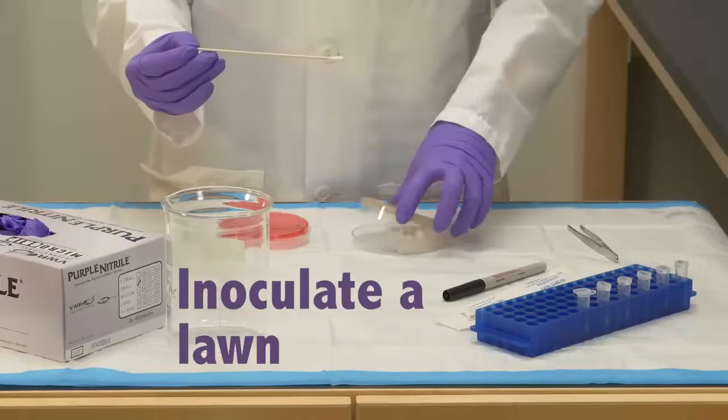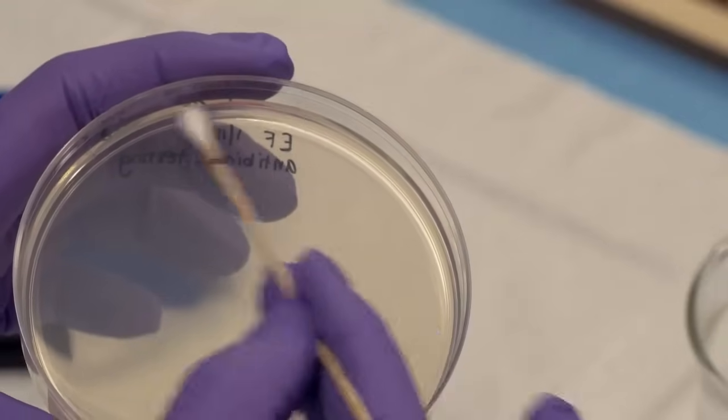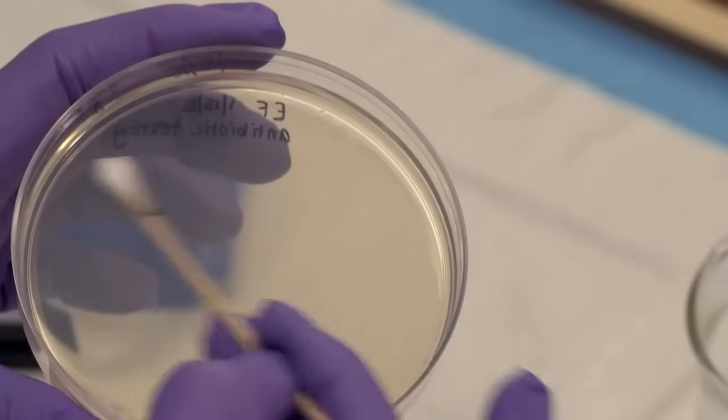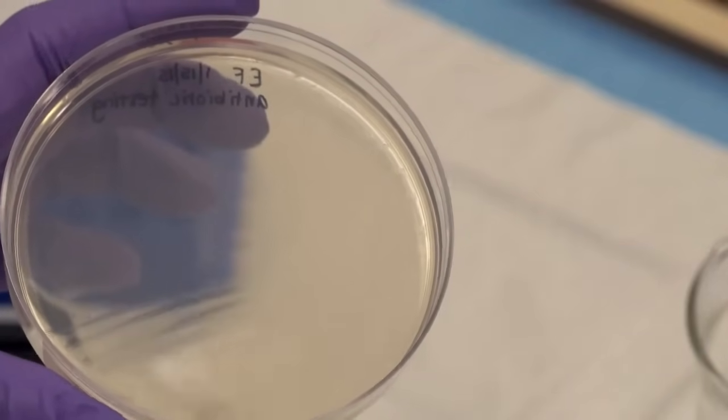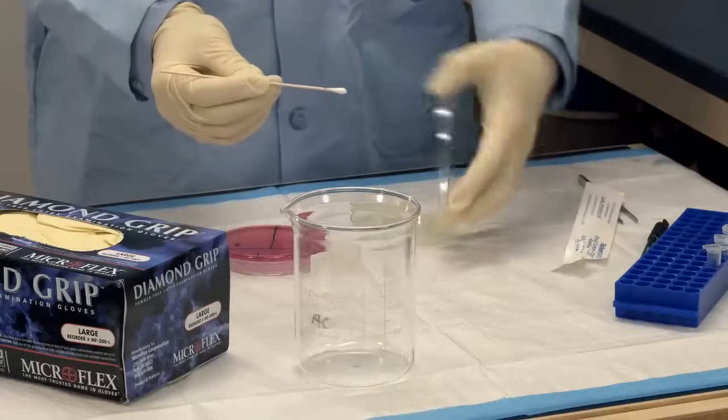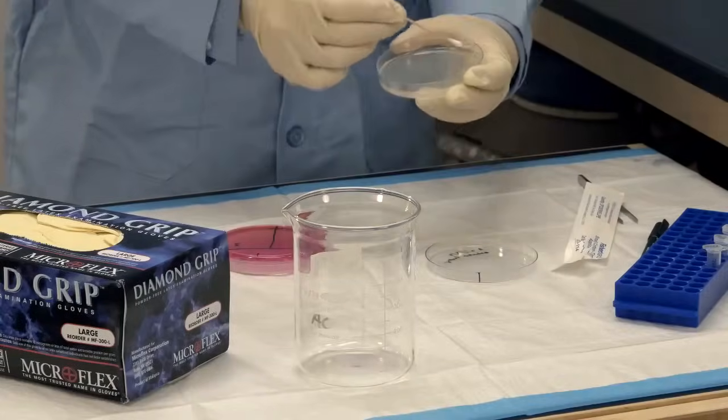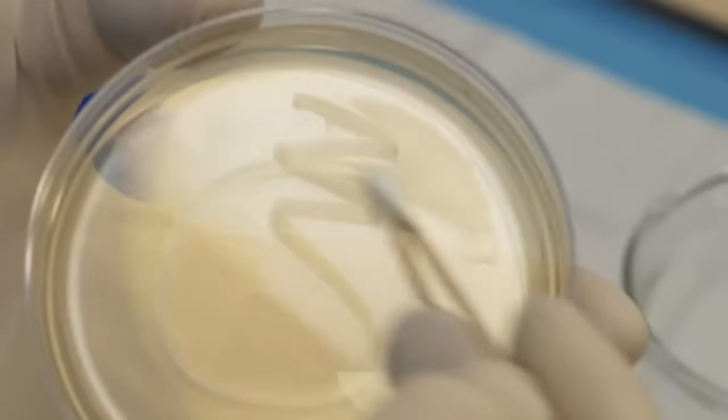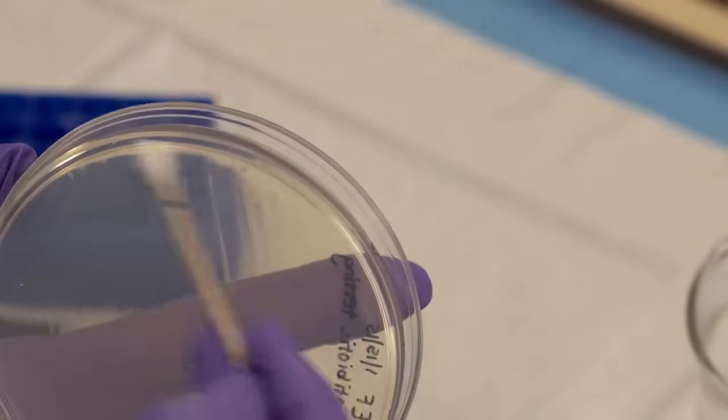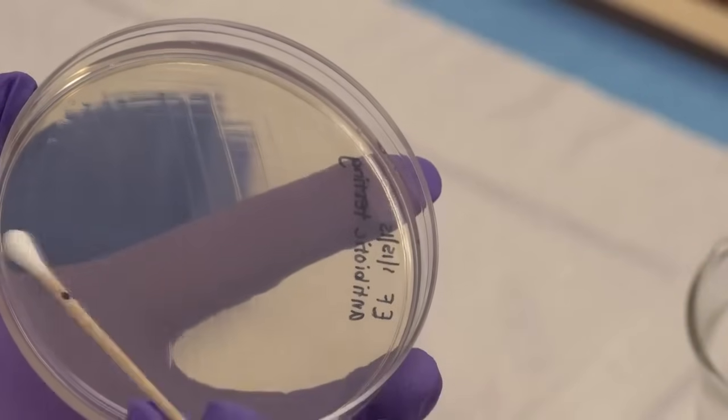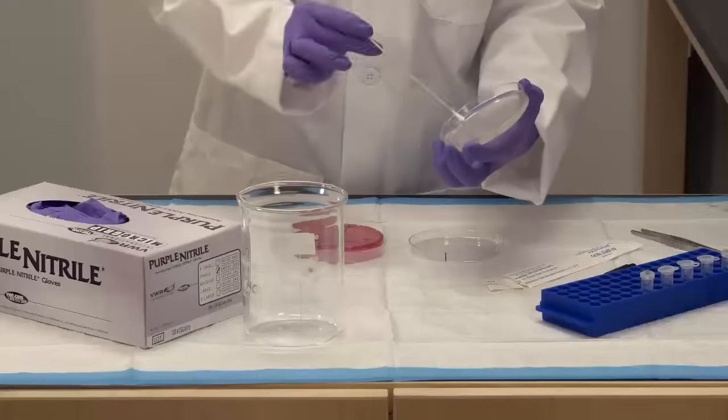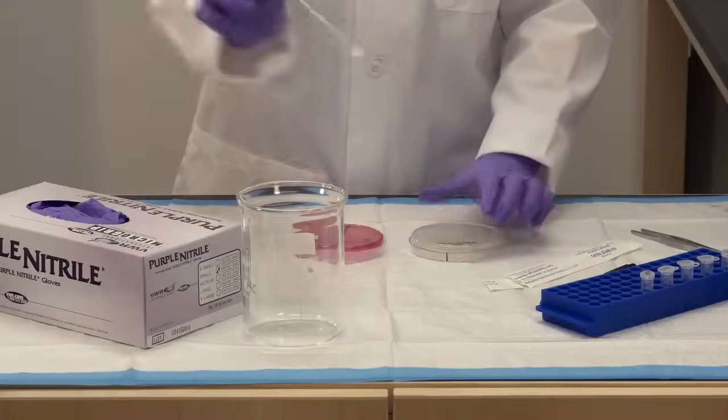Now, inoculate a lawn on the blank plate by spreading the bacteria evenly. It's important to cover the whole plate. You can spread the bacteria again in the perpendicular direction. Discard the bacteria covered swab in a waste container.